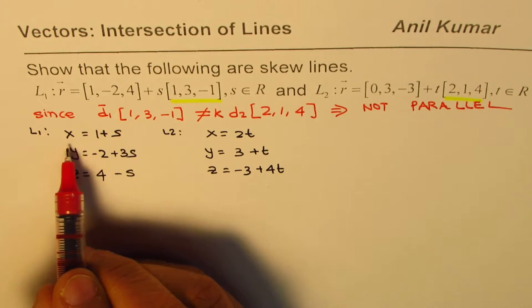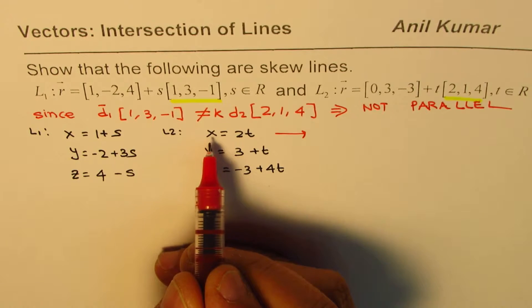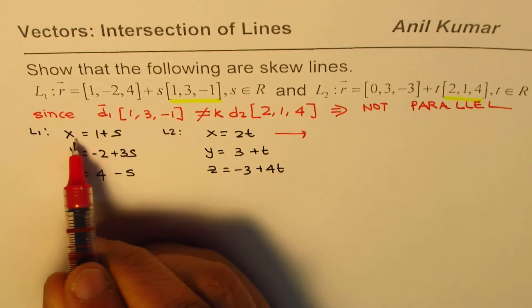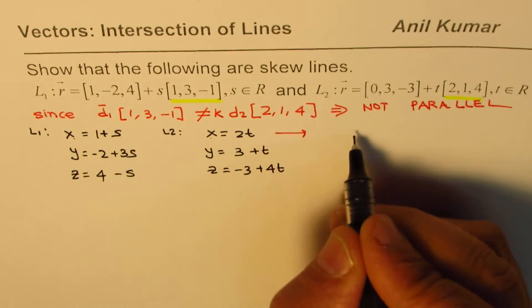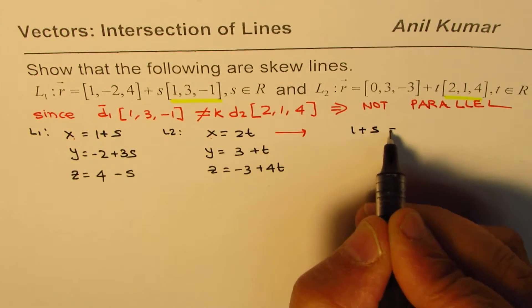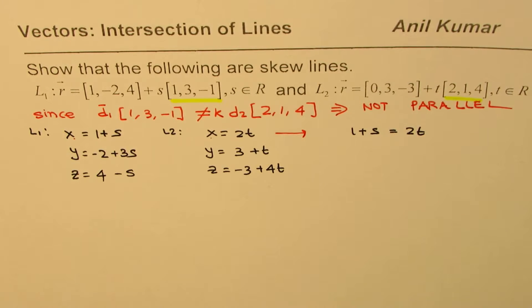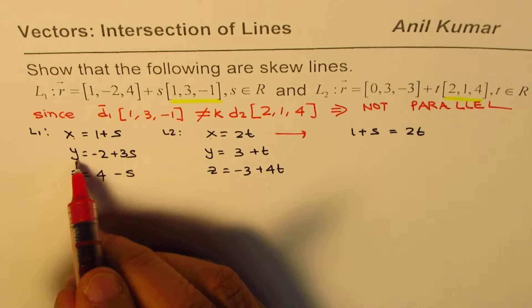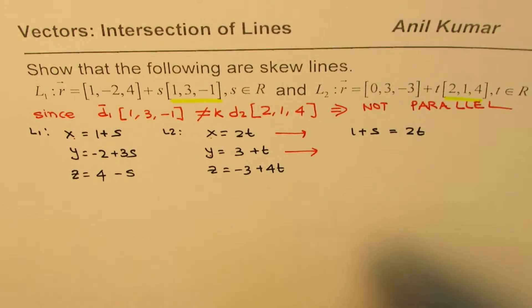From the first set we can get an equation. Both are x, so if we have a point of intersection these two x values should be the same. That gives us an equation which is 1 plus s equals 2t.